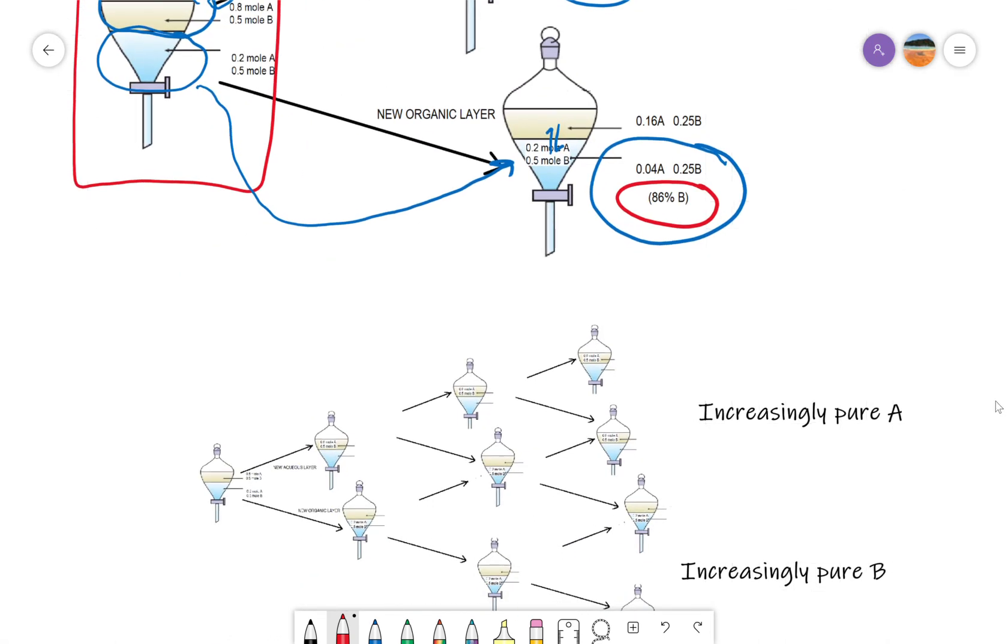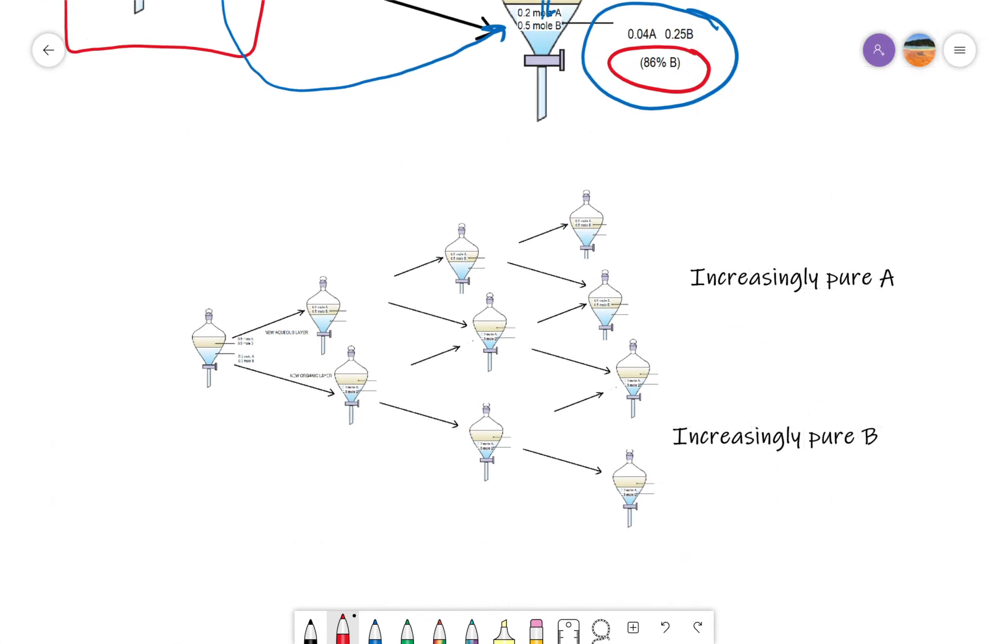But, of course, this leads to a very complex solution in which you're trying to keep track of which flask is what, and it's all a clear solution. But, you can start combining upper and lowers to combine everything. But, the more the number of equilibria you do, the more purification that you get, the more separation you get.